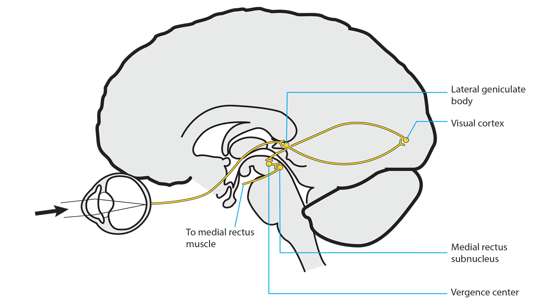The misalignment pattern will be a comitant esotropia or exotropia, depending upon whether the brainstem convergence centers, liberated from cerebral influence, overact or underact.